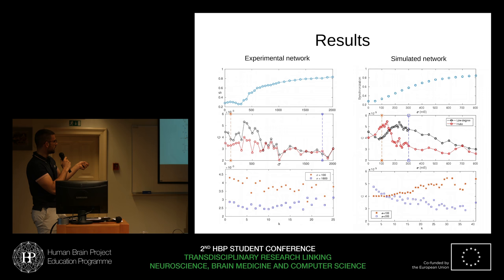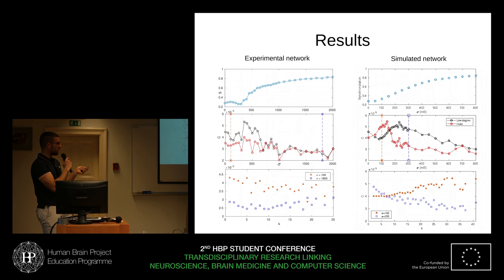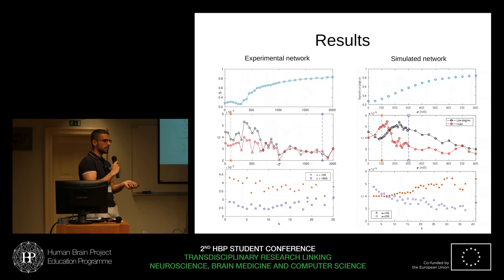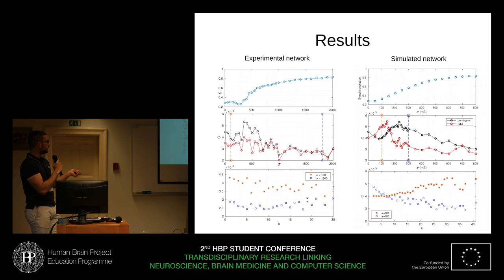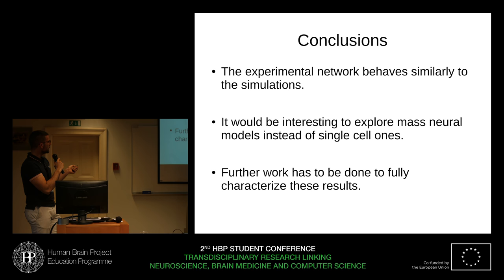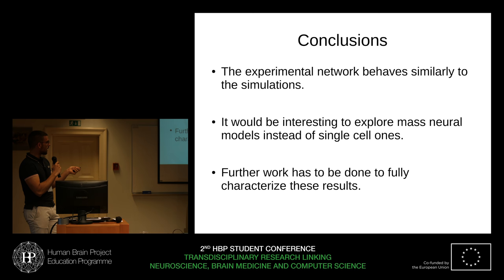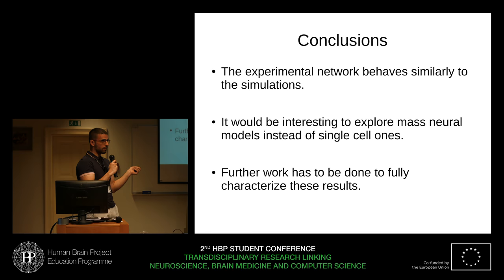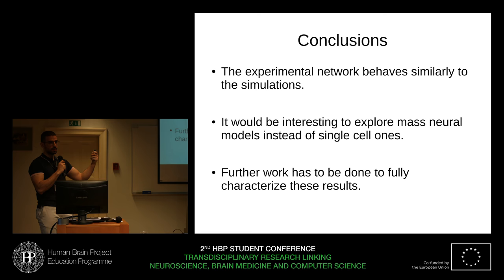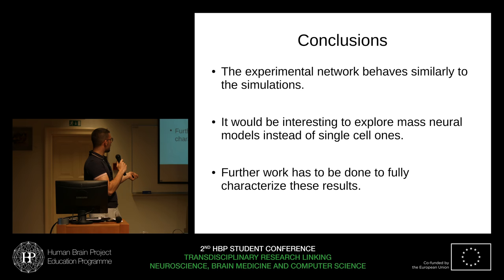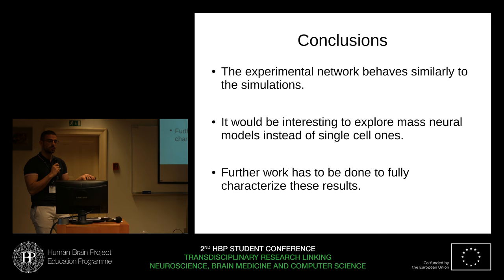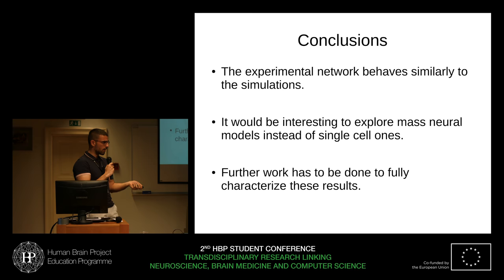It's true that the experimental result is not as well-defined as the simulated one, but this is still important because the model we've used is a single-cell model, and as I mentioned, we are dealing with neural aggregates, so it's not common or expected to hope for similar results. Concluding, the experimental network behaves similarly to the synthetic one, although this wasn't a priori expected. I'm interested in exploring more modern neural bio-inspired models instead of single-cell models, because the aggregate may not behave as a single unit since it's not fully synchronized. Further work is needed to fully statistically characterize this method.